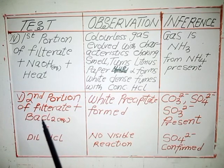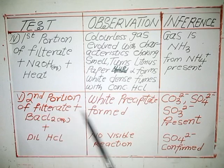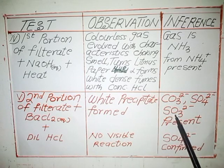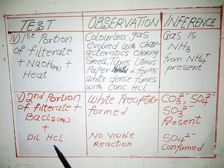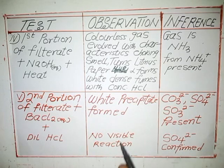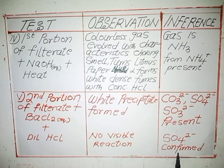For the second portion of the filtrate, add barium chloride, then dilute HCl. When you do this, a white precipitate will be formed. The inference would be CO3²⁻, SO4²⁻, or SO3²⁻ present. When you then add dilute HCl, there will be no visible reaction — the precipitate remains unchanged, or you can say the precipitate is undissolved. The inference here is that SO4²⁻ is now confirmed.